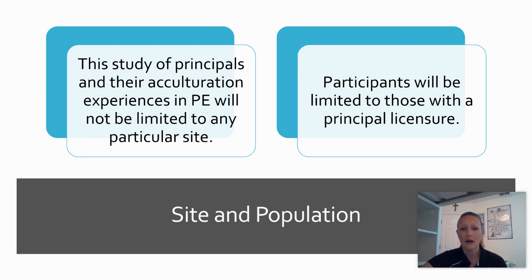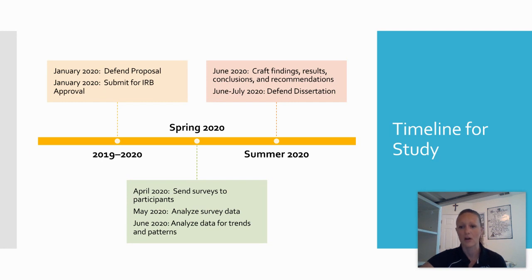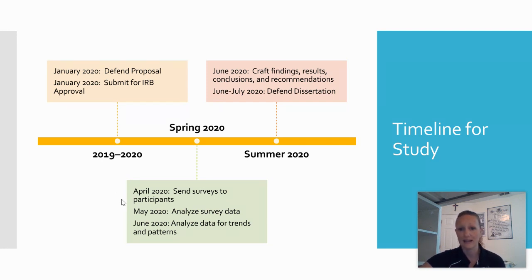In this study, there was no particular site — it was open to any principal who holds a licensure. I even had some superintendents and some coordinators for PE in their districts respond, which offered lots of different perspectives. This is a timeline for my study: I defended my proposal and submitted for IRB approval back in January, began sending out surveys in April — unfortunately right as the COVID-19 shutdown happened, which made things a little bit difficult to navigate. Coming into May, I'm right in the throes of analyzing the survey data and looking for trends and patterns. I should be able to finish by late summer and publish and wrap this research up.